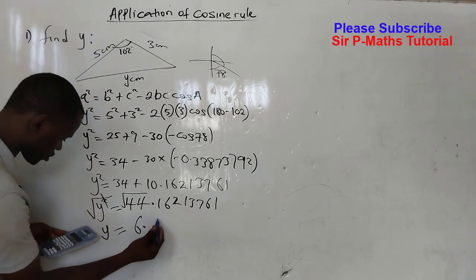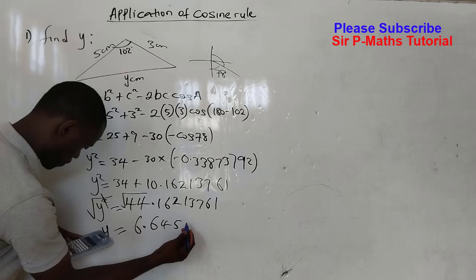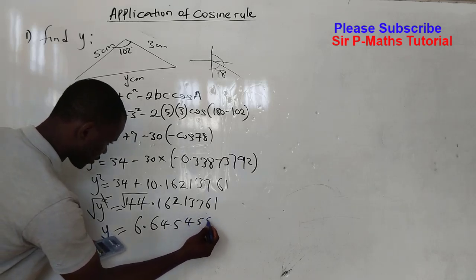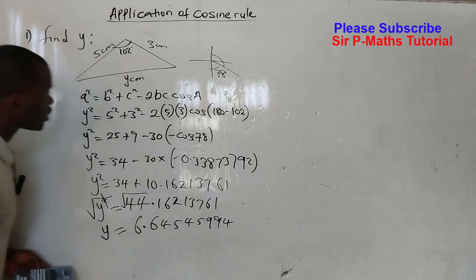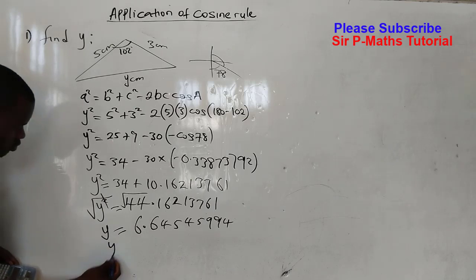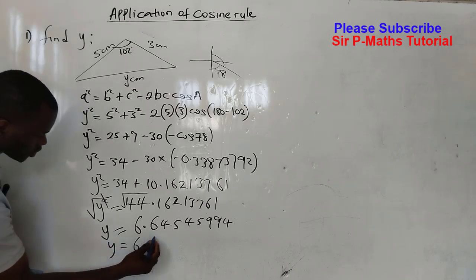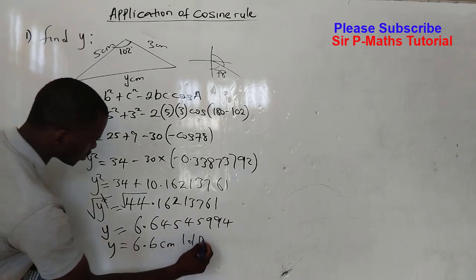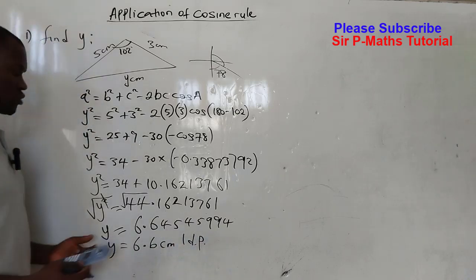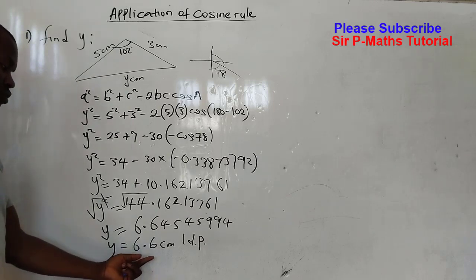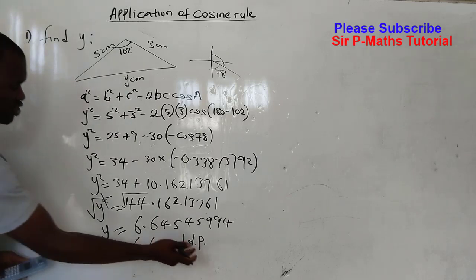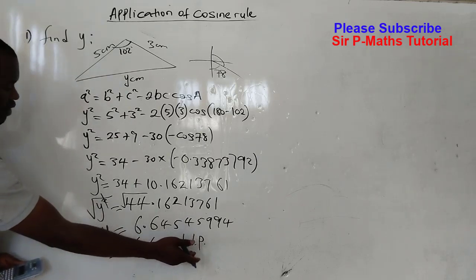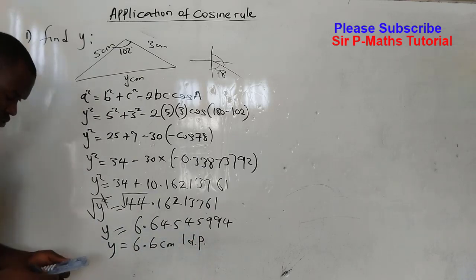This gives me 6.64545994. Let us approximate to one decimal place: 6.6 cm, one decimal place. Remember we are not told to which decimal place we are presuming to, so whatever decision you have taken you must define it, you must let us know.